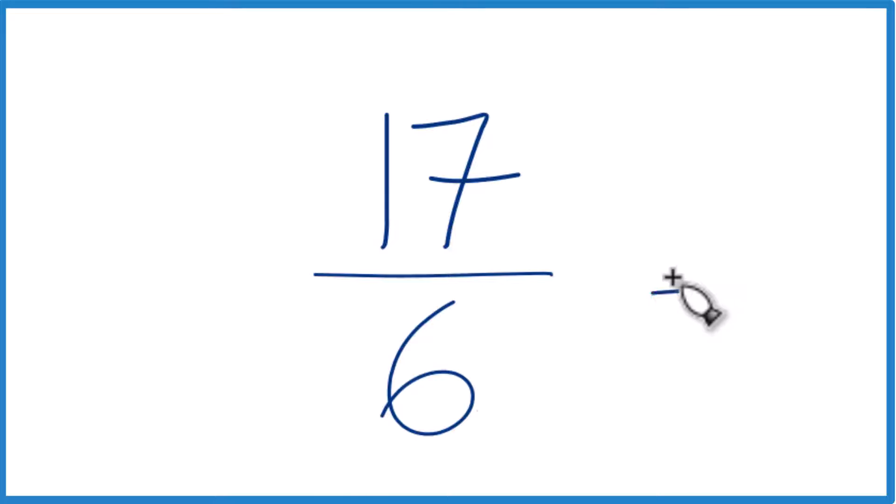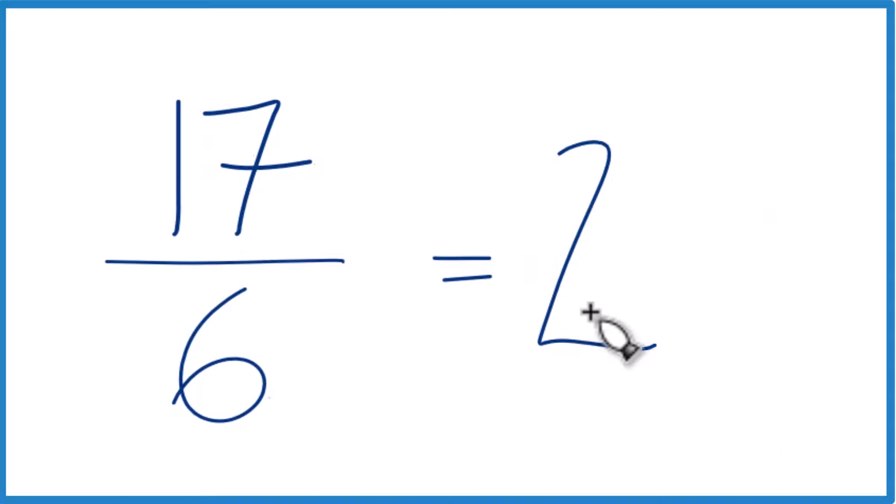Here's how we do it. We take and see how many times 6 goes into 17. 6 times 2 is 12. 6 times 3 is 18, and that's too much. So let's go 6 times 2, and that gives us 12.